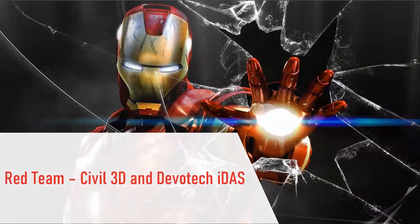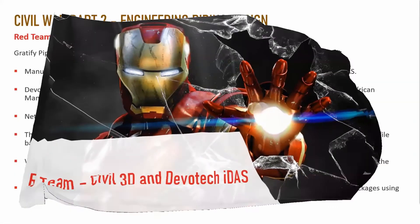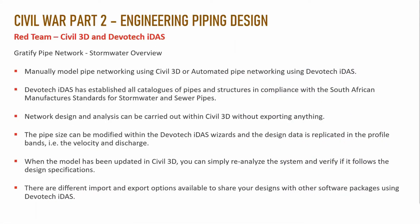Now we move on to the alternative: Civil 3D combined with Devotec IDUS. For gravity pipe networks and the stormwater overview, you can either manually model the pipe network using Civil 3D tools or use the automated pipe network creation in Devotec IDUS. Crucially, Devotec IDUS has established all the catalogs for pipes and structures already in compliance with South African manufacturing standards for stormwater and sewer pipes and structures — so you don't need to build any catalogs yourself.